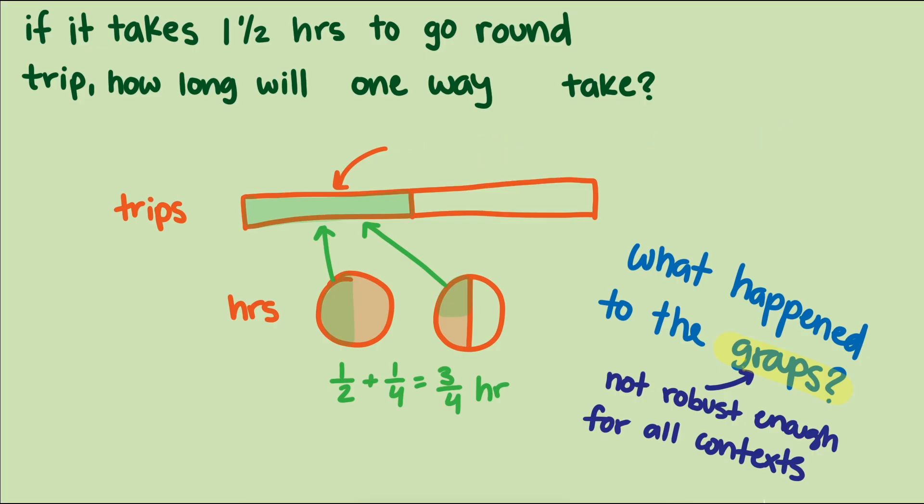The unit here is one trip, and we want to know the answer to how much time is in one trip. Or we could say it this way, how much time in one whole trip. This starts to show why partitive division is a good fit for this problem.